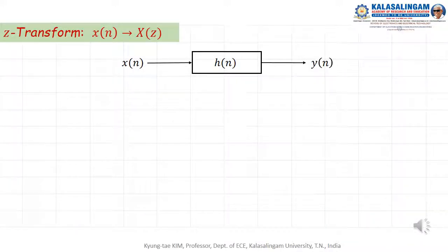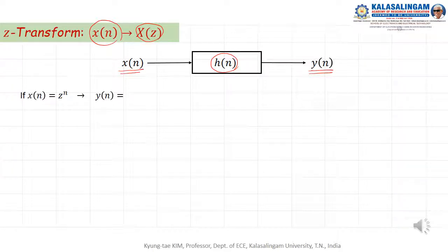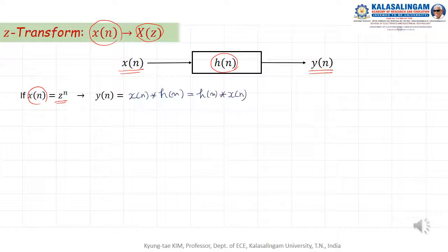What is the Z-transform? The Z-transform converts X of N to X of Z. Given input X of N and impulse response H of N, we get output Y of N. If input X equals Z to the power of N, then Y of N equals H of N convolved with X of N, which equals the summation from K equals minus infinity of H of K times X of N minus K.